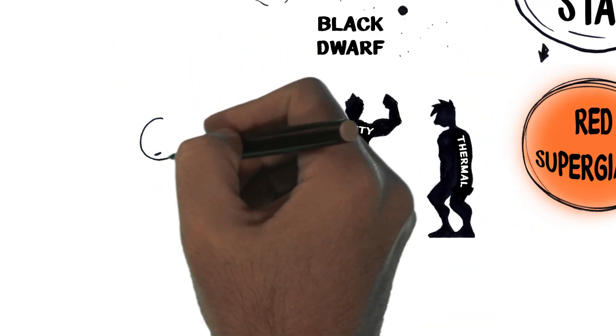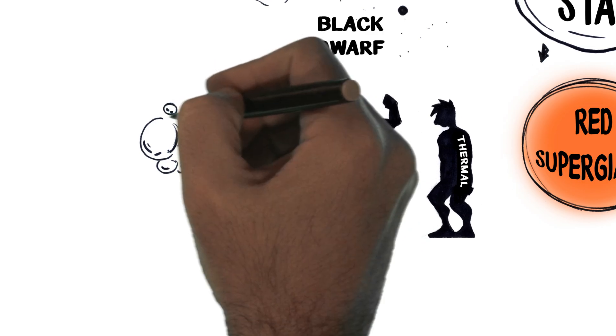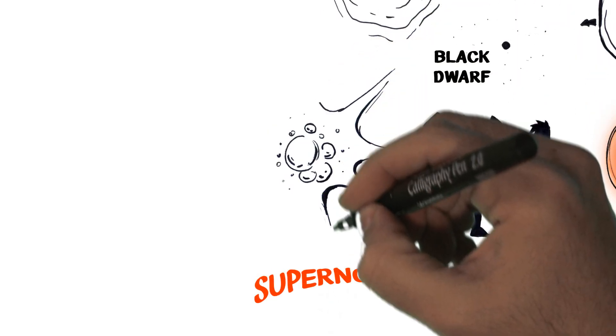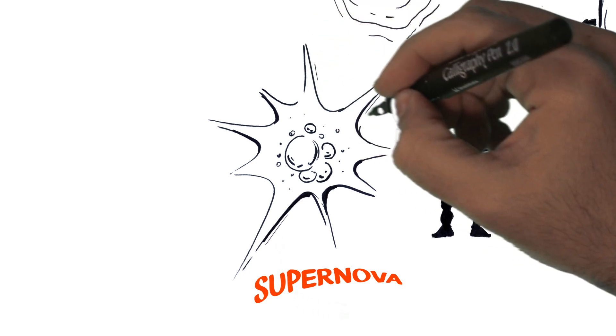The core of red supergiant takes only a few days to collapse, radiating vast amounts of energy in an event called supernova. A supernova, for a short time, can be brighter than an entire galaxy of stars. The outer shell is pushed into deep space by the supernova.